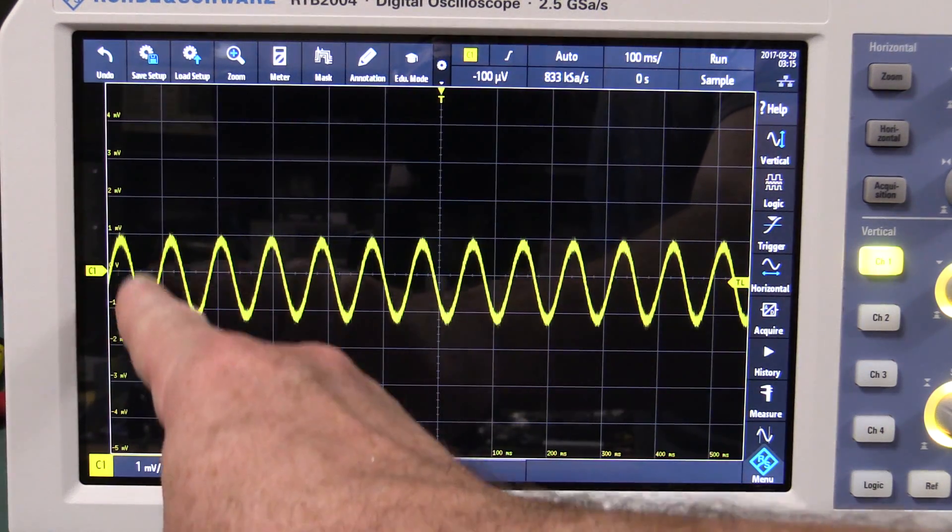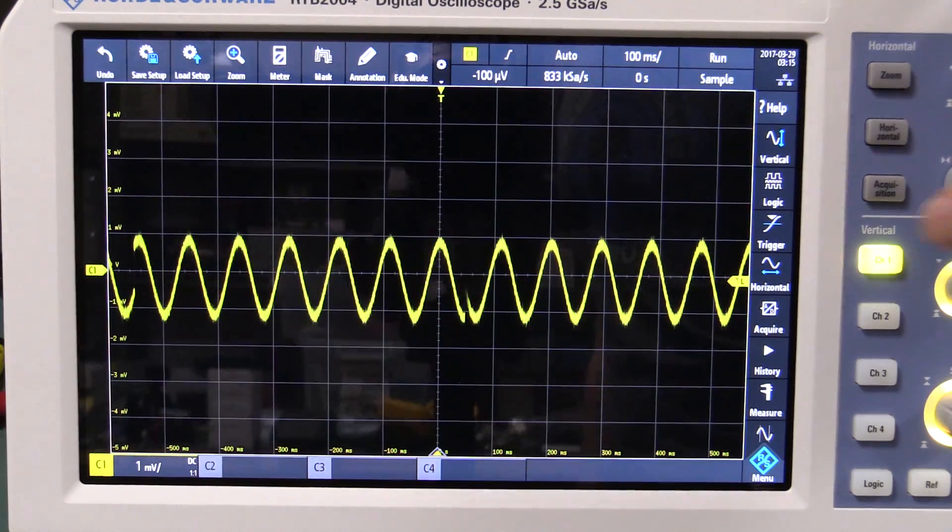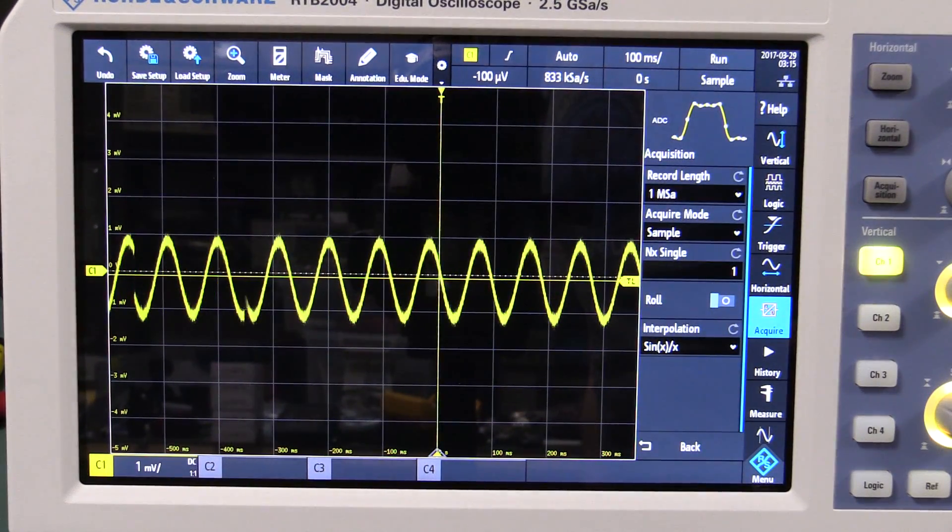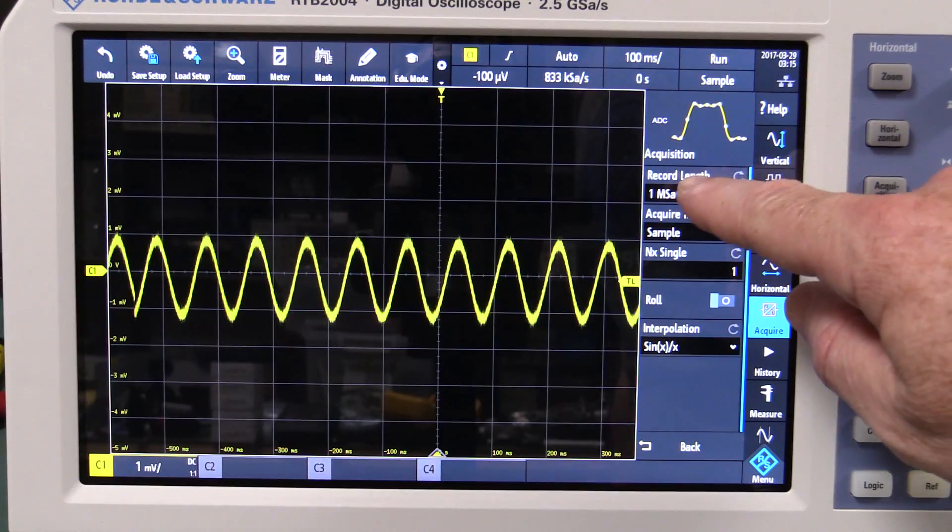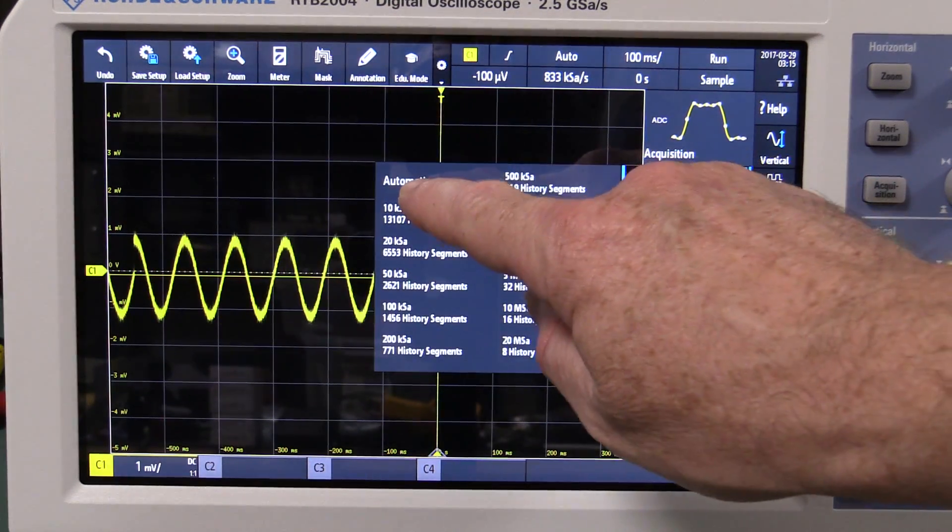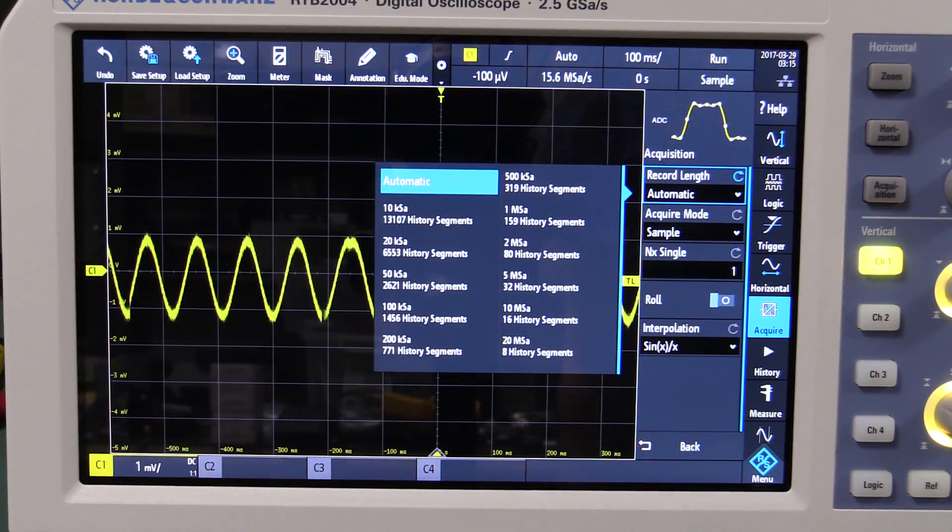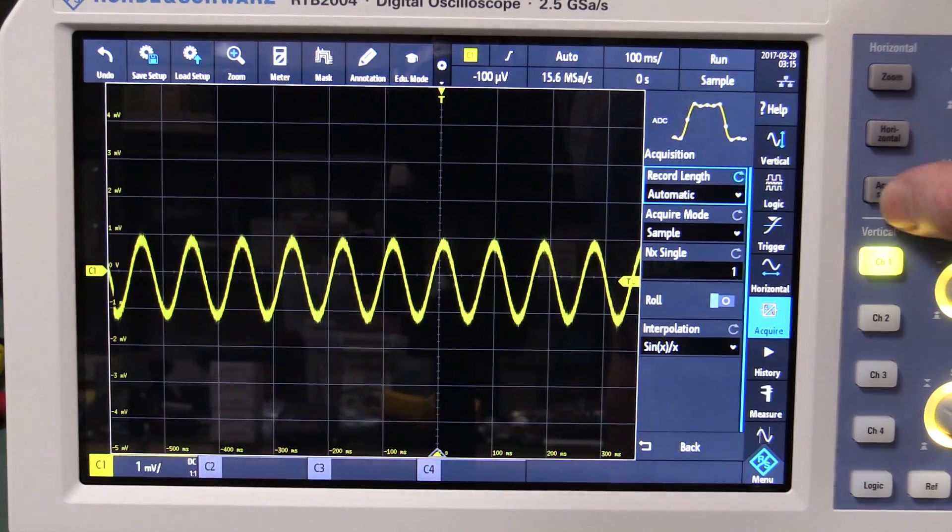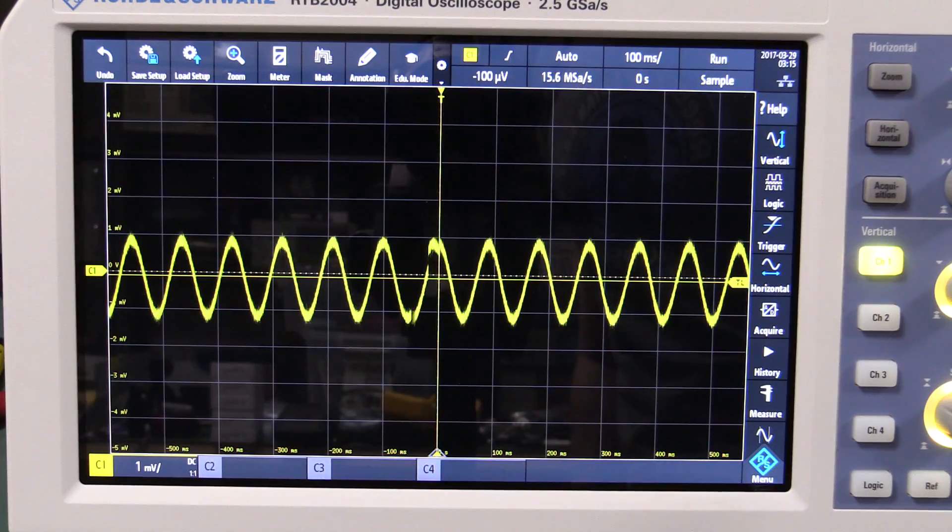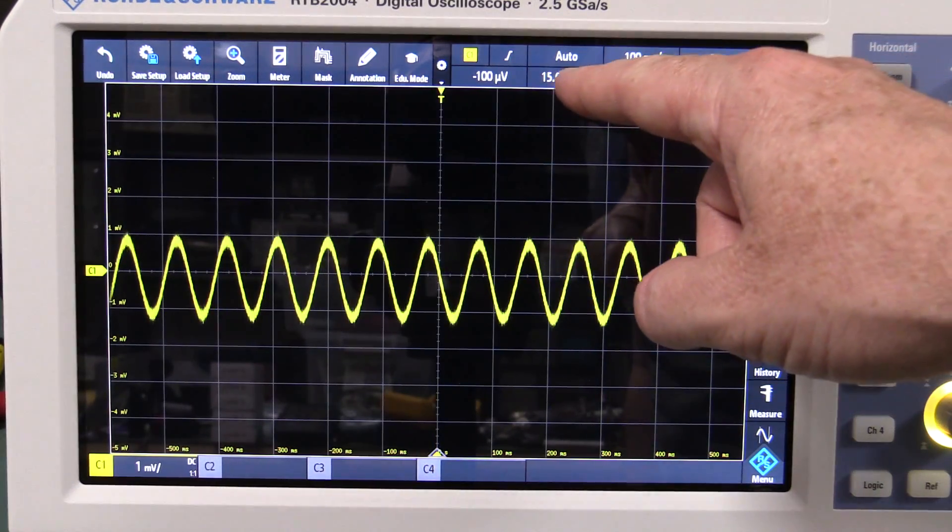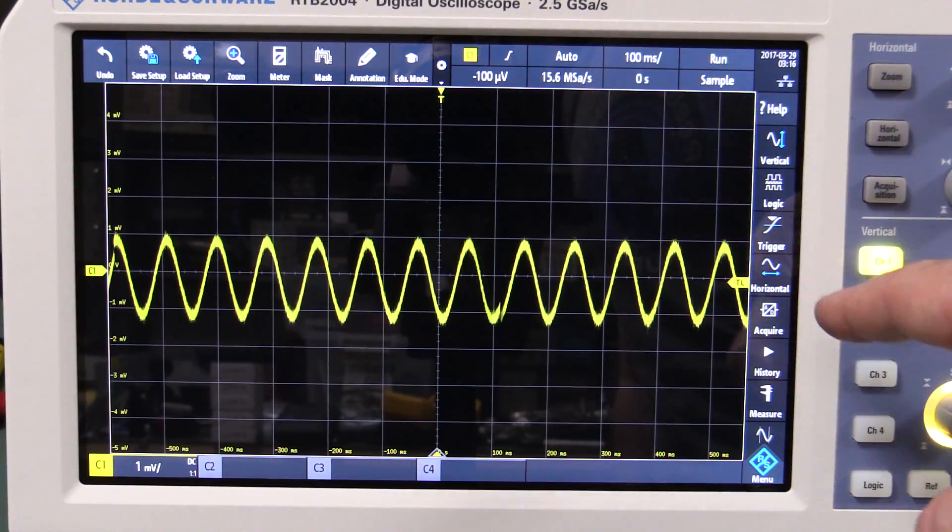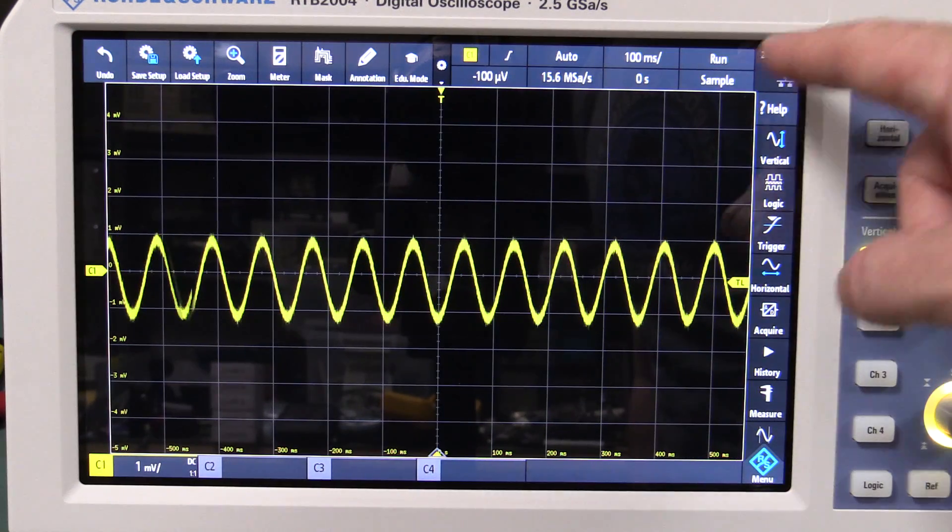Now this seems to be a function of the acquisition memory length. So I've got it on 1 meg at the moment. If I put it on automatic, please forgive me, I've only been using the scope for 5 minutes, so I don't know how it's all working. I don't even know where it's displaying 15 meg samples.